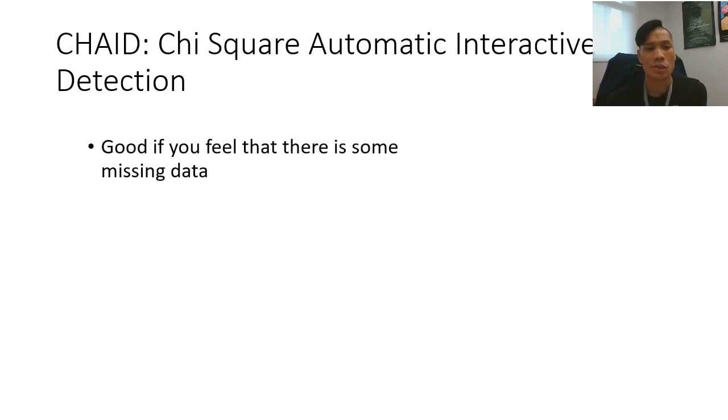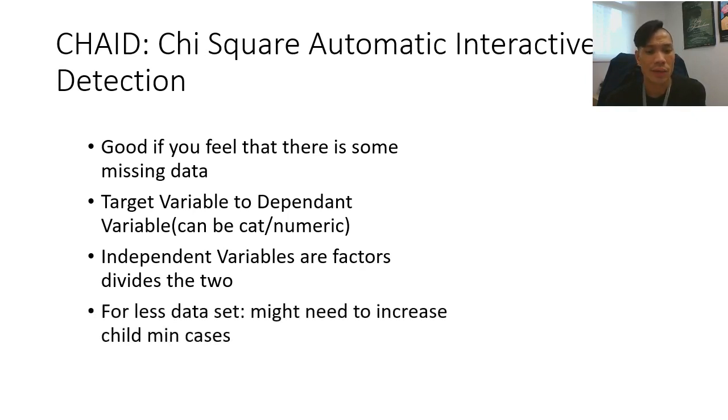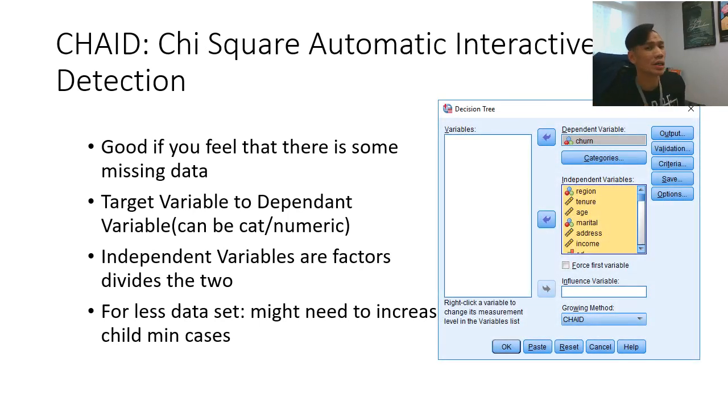The algorithm I'm going to be using is the CHAID algorithm, or formally known as the chi-square automatic interactive detection algorithm. This algorithm is good, especially if you feel that there is some missing data - it actually deals with the missing data. Your target variable, the dependent variable here, can be either categorical or numerical. And the independent variables are factors that divide the two categories. Or if you have more categories, you can also use that as well. For less data sets, you might want to increase the child minimum cases. I'll tell you what that is.